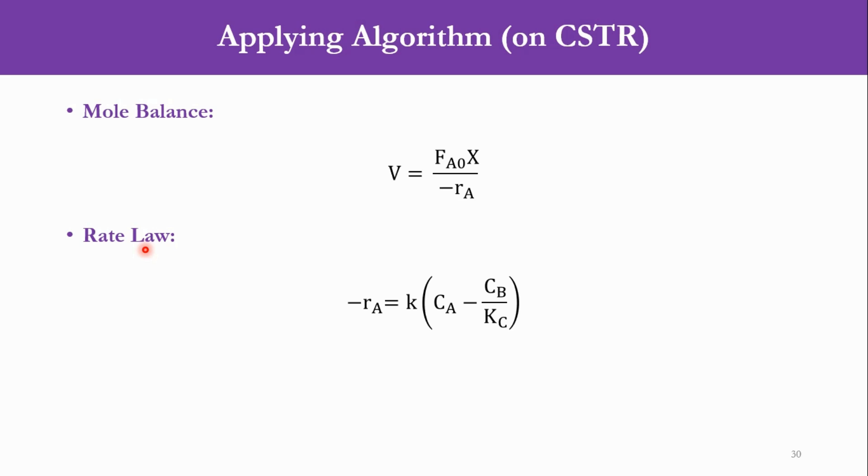For rate law, it has been given that it is an elementary reversible system. Once it is a reversible system, we will have to include the product side, and since it is elementary, the exponents are same as that of the parameters in the reaction. Once we talk about non-isothermal systems, the value of K will now be calculated as K = K(T1) × exp[E/R(1/T1 - 1/T)]. This is how we will calculate it, and once we calculate the rate of reaction, we can calculate the value of volume.